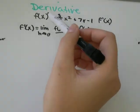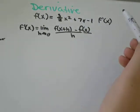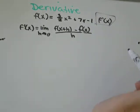So we've got the question: f of x is 3 over 2x squared plus 7x minus 1, and f prime of x is what we're trying to find.